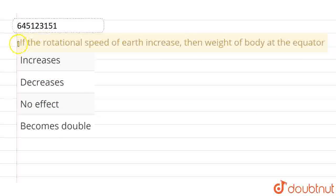Hello, everyone. If we talk about this question, the given question is: if the rotational speed of Earth increases, then weight of the body at the equator - and the given options are increases, decreases, no effect, and the last option is becomes doubled.